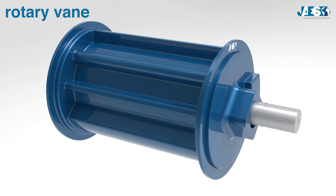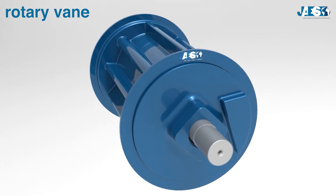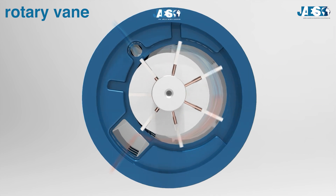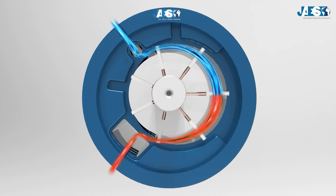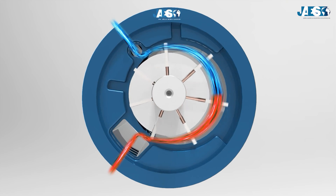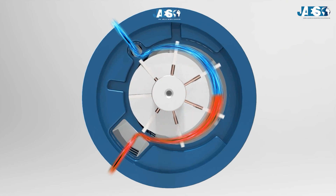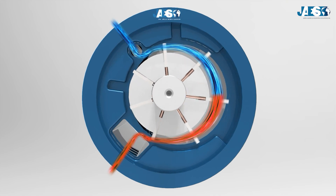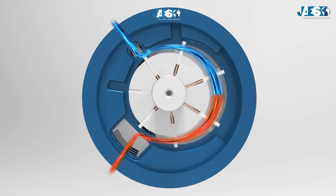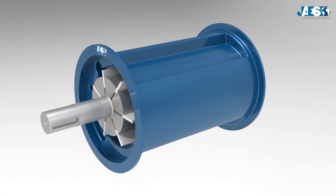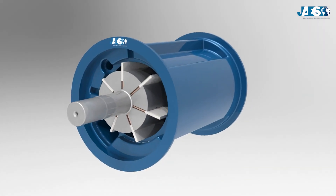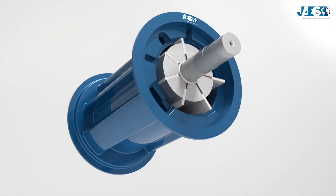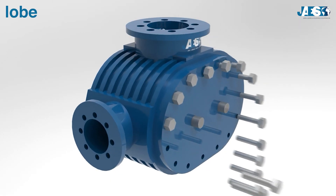Moving on, we come to analyze the rotary vane compressor. Here we have a very different type of product: a circular rotor is equipped with vanes which are pushed by springs to keep them constantly in contact with the walls of the circular cavity against which they slide. The rotor is not centered on the cavity, thus creating variable volume chambers at their maximum on the suction side and at their minimum on the delivery side, obtaining gas compression.